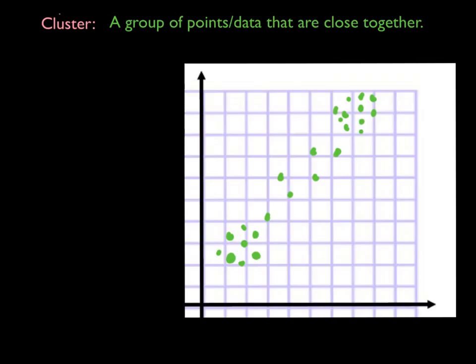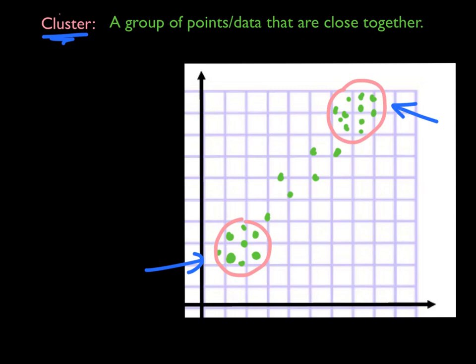One other vocab word you'll need to know when looking at scatter plots is called a cluster. A cluster is a group of points or data that are close together — one little group of data all super close together. If I look at this scatter plot, the points in the middle are a bit spread out going up, but then I see these clusters of data — a bunch of points all right together in one spot. So those are called clusters. If you're looking at a scatter plot, you'd want to say there are a couple of clusters of data and describe where they are. I'd still say this is linear, it's going up so it's positive, and it's moderate to strong for the strength.